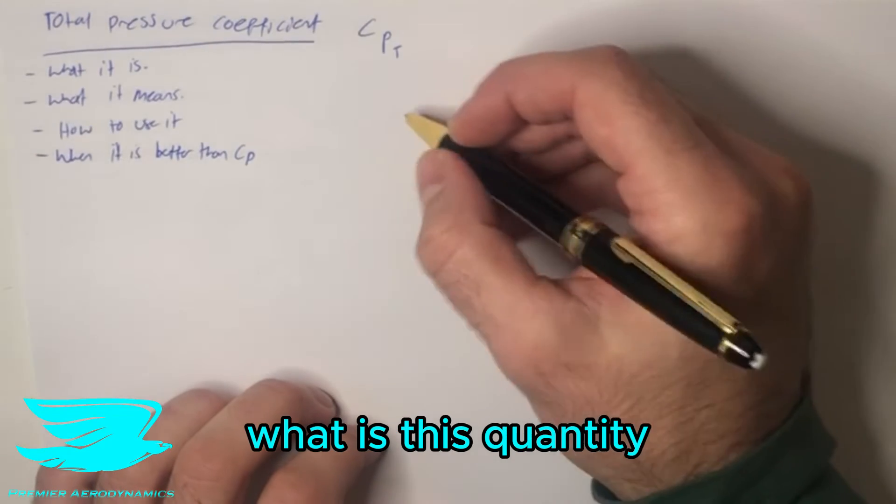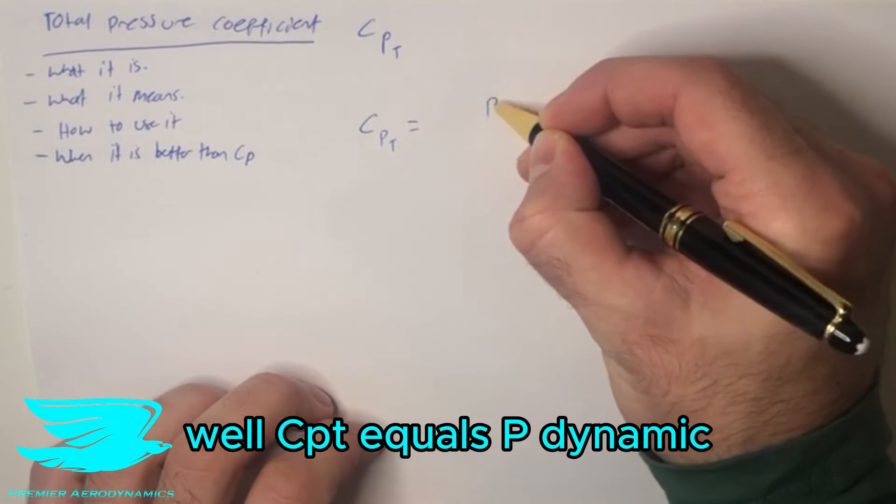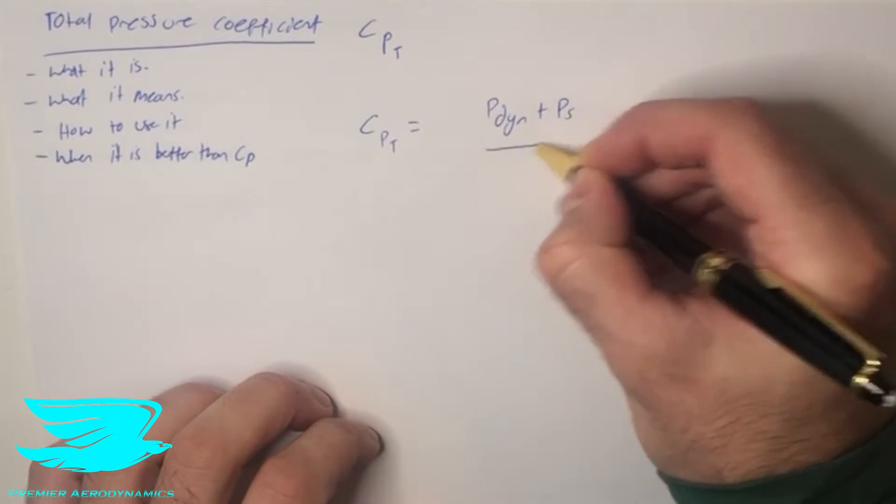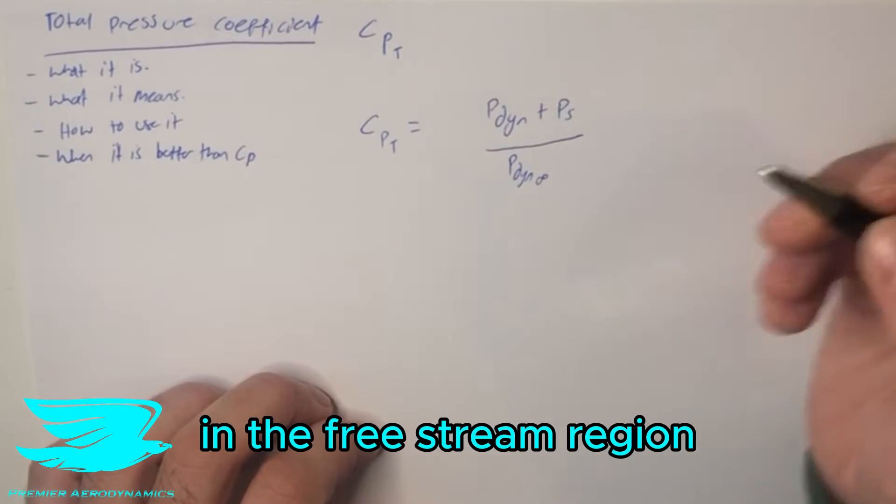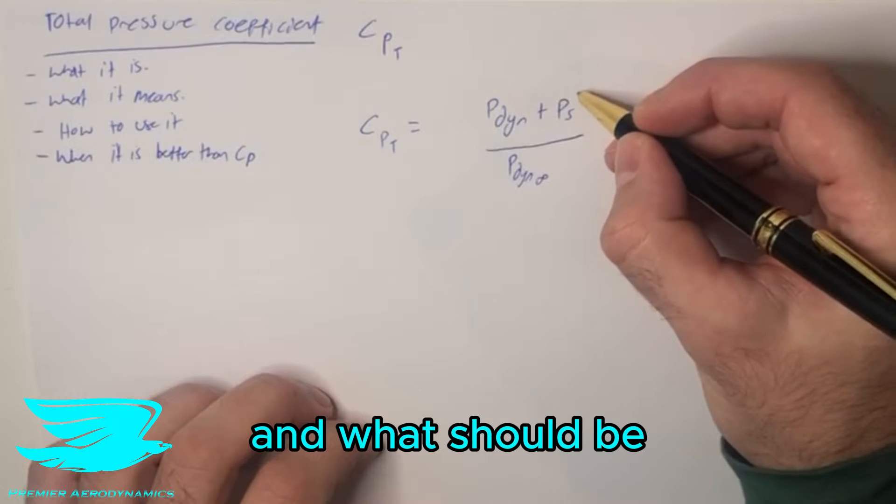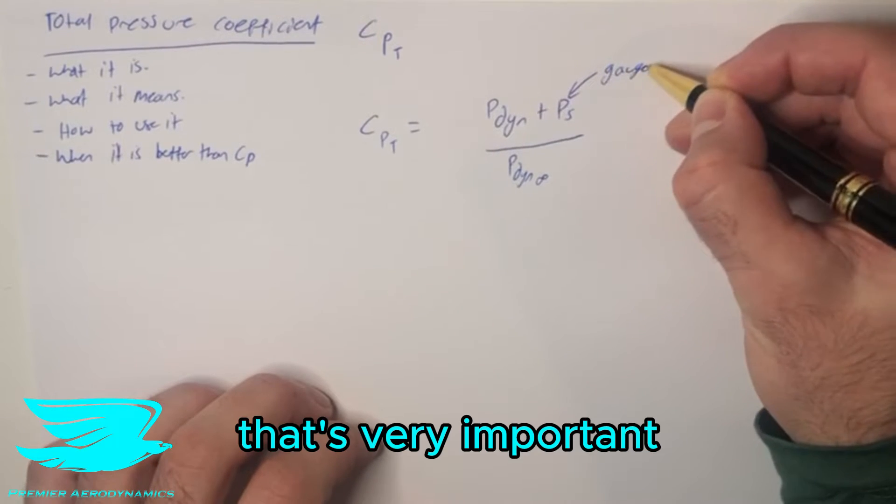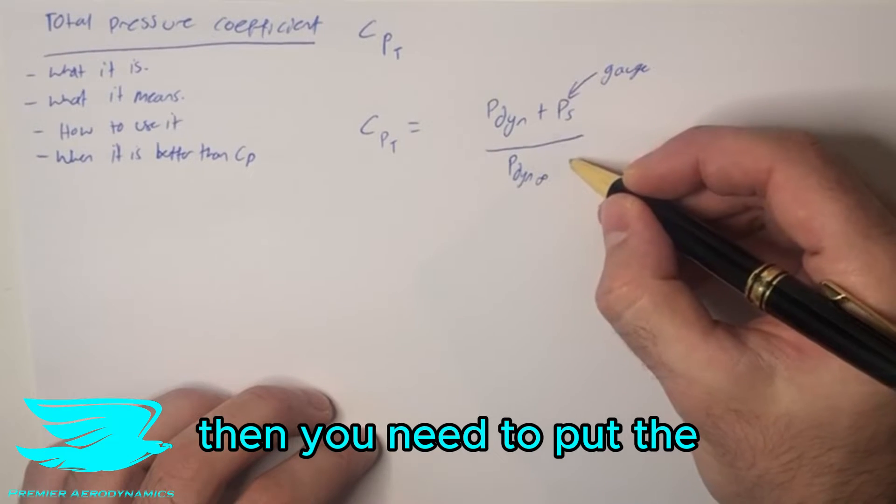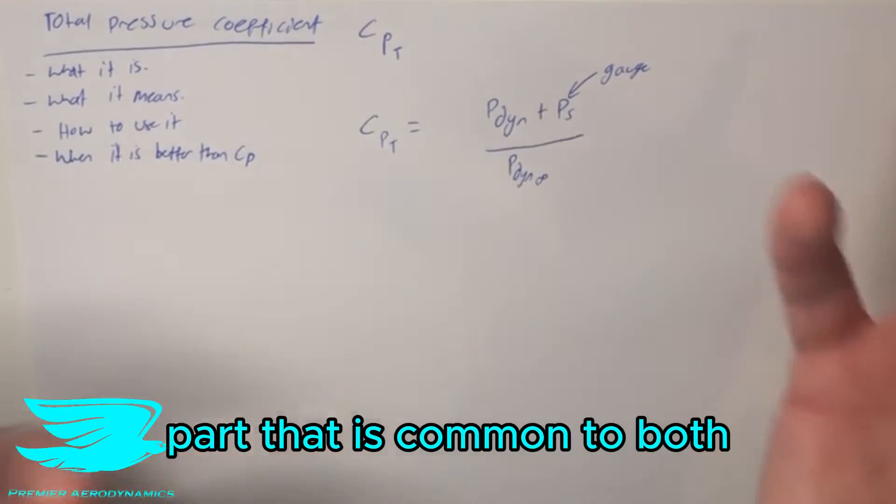So first of all what is this quantity? Well CPT equals P dynamic plus P static divided by the dynamic pressure in the free stream region and one thing that should be stressed is this value here is gauge. That's very important because if you have it as absolute then you need to put the absolute static pressure on the bottom line as well to cancel out that additional part that is common to both.